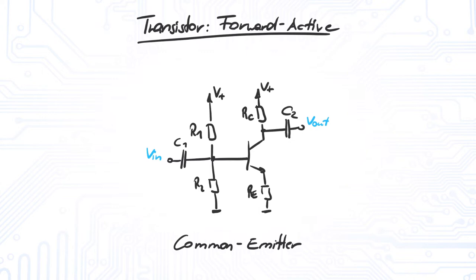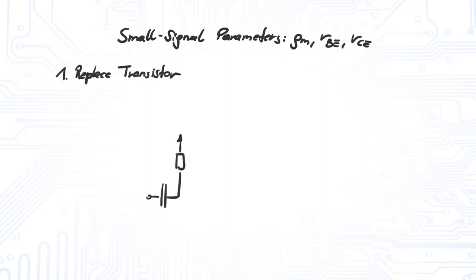If we want to determine the properties of the amplifier, we have to do a small signal analysis. This means we calculate the small signal parameters GM, RBE, and RCE. With these, we are able to draw the small signal equivalent circuit.